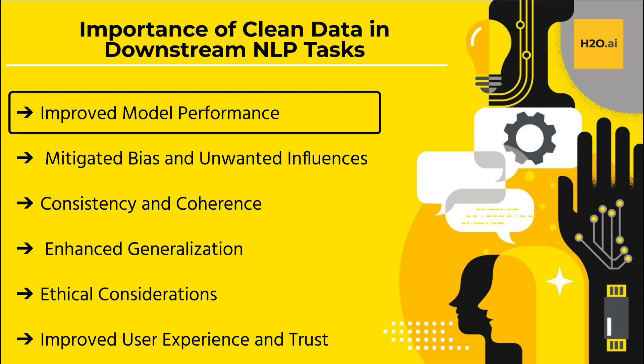There are several key reasons why clean data is crucial for downstream NLP tasks. First, improved model performance: clean data eliminates noise, errors, and inconsistencies that could hinder the model's performance. By removing irrelevant or misleading information, the model can concentrate on learning relevant patterns and relationships, leading to improved accuracy, precision, and overall performance in downstream tasks.